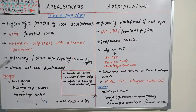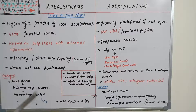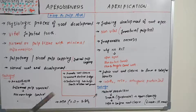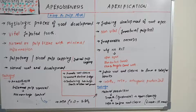Apexogenesis can be done by pulpotomy, direct pulp capping, or indirect pulp capping. It involves removing a little bit of the coronal pulp, allowing formation of a dentinal barrier, and letting the root continue through the natural physiological process. Normal root end development will happen, promoting root closure and formation of a dentinal bridge coronally. Calcium hydroxide is placed, and it sustains Hertwig's epithelial root sheath, which allows root formation, so normal root length will be obtained.